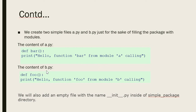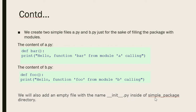Then we have the file b.py, which has the function named foo. It has the print statement: "Hello function foo from module b calling." We will also be adding the empty __init__.py file inside the same simple_package directory.